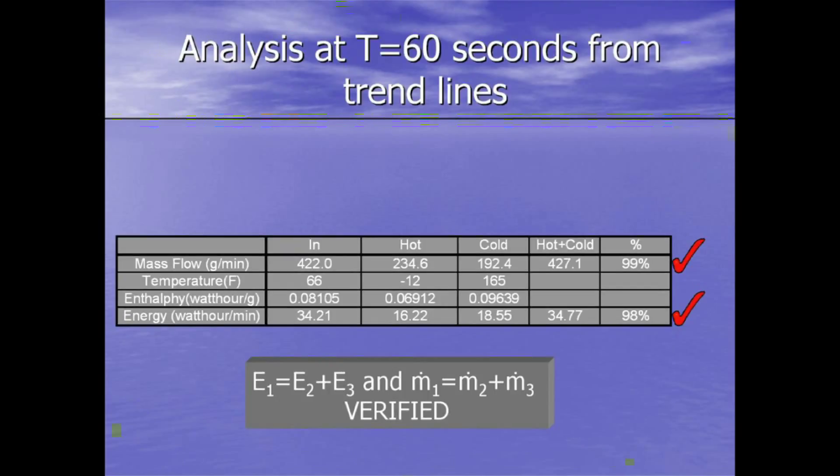Sticking that into an analysis table at the time equals 60 seconds and running the numbers where I took the mass flow in versus hot and cold and see how they compare, the in versus hot plus the cold, the numbers were within 99 percent. I thought that was very good, and the same thing when I took the temperatures and looked up in the gas table the enthalpy. It gave it to me in BTUs per pound, so I had to convert it to watt hours per gram.